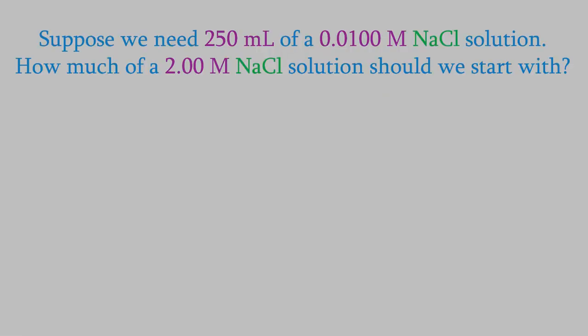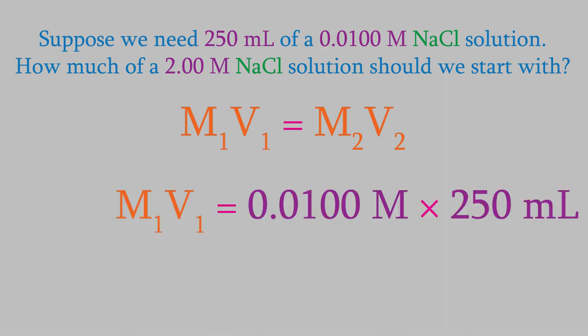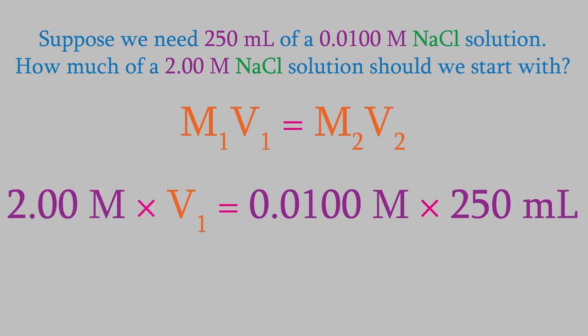Let's try one more. Suppose we need 250 mL of a 0.0100 molar NaCl solution, but we only have a 2.00 molar solution. How much of the concentrated solution do we need? Using M1V1 = M2V2: M2 is 0.0100 molar, V2 is 250 milliliters, and M1 is 2.00 molar. Solving for V1 gives 1.25 milliliters — that's the volume of the 2 molar solution we should start with.